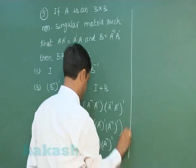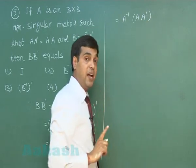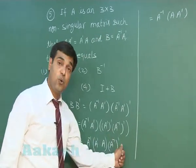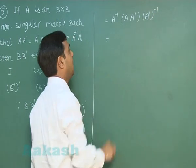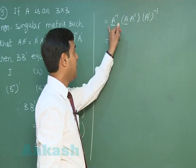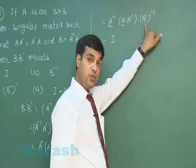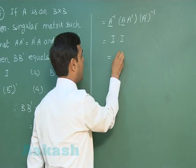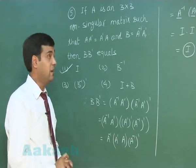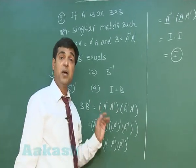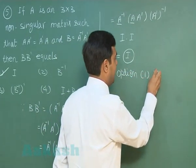We now have A-inverse times (A · A-transpose) multiplied with A-inverse-transpose. The last term A-inverse-transpose can be written as A-transpose-inverse. Using the first and second terms, A-inverse times A gives the identity matrix I, multiplied with A-transpose times inverse of A-transpose, which is another identity matrix. So the product comes out as the identity matrix. From the given options, the correct answer is 1 — option 1 is correct. It was quite simple, applying properties of matrices.